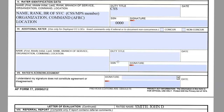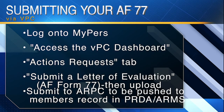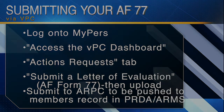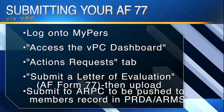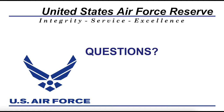Now I will go over how to submit an AF 77 through VPC. How to submit an AF 77 via VPC: first, log on to MyPERS and click to access the VPC dashboard. Then click on the action request tab. From the list of options, specifically click on 'submit a letter evaluation' for Form 77. Then upload the report and submit to ARPC so they can push the report into the member's record and ARMS. Now we can open up for questions and comments from our audience.